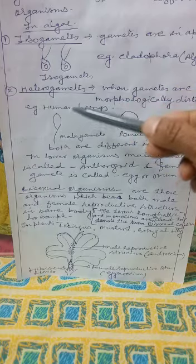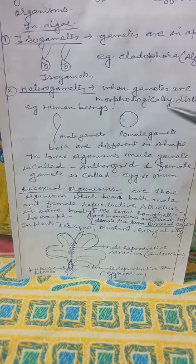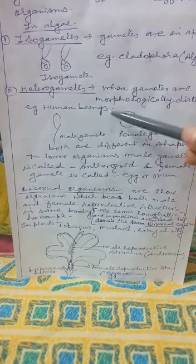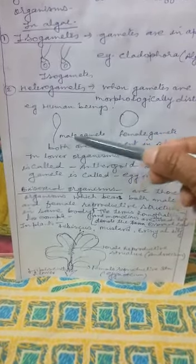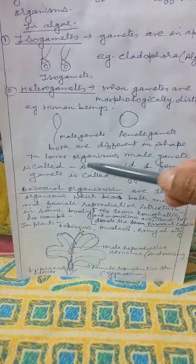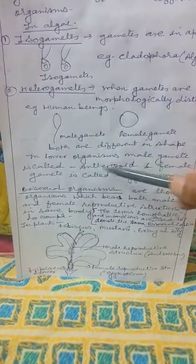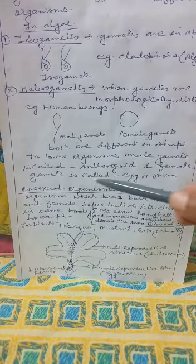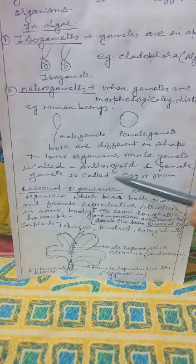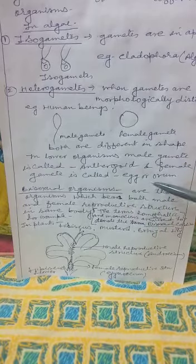The second type is heterogametes. Heterogametes are gametes that are morphologically distinct. For example, in human beings, two types of gametes are produced — male gametes and female gametes — and they are different in shape and size, which is why they are called heterogametes. In lower organisms, male gametes are called antherozoids and female gametes are called eggs.